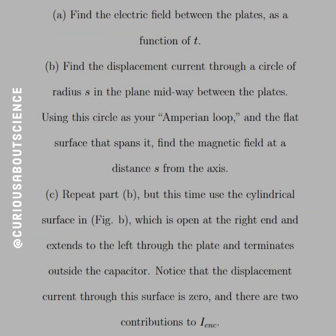All right, so part A, we want to find the electric field between the plates as a function of time. Part B, find the displacement current through a circle of radius s in the plane midway between the plates. Using the circle as your Amperian loop and the flat surface that spans it, find the magnetic field at a distance s from the axis.